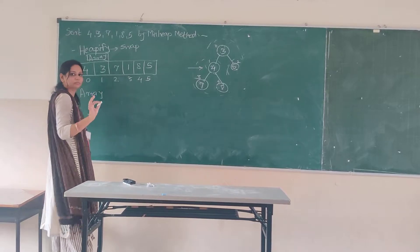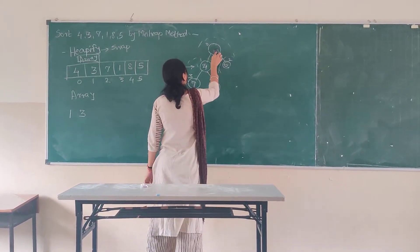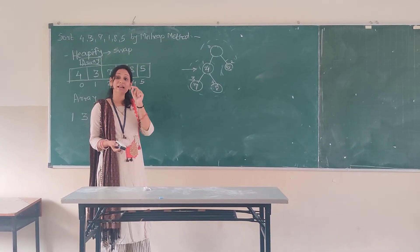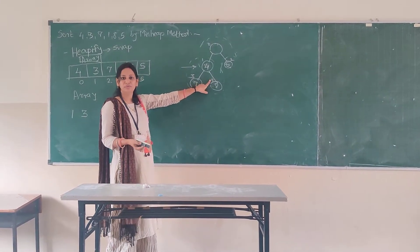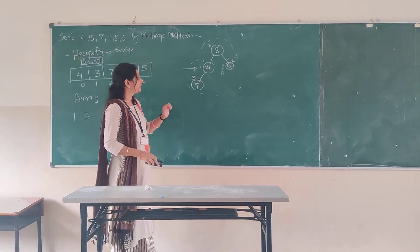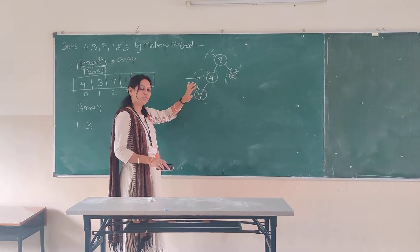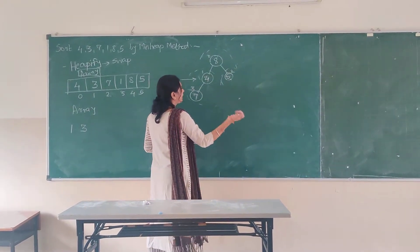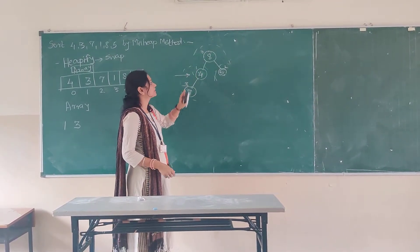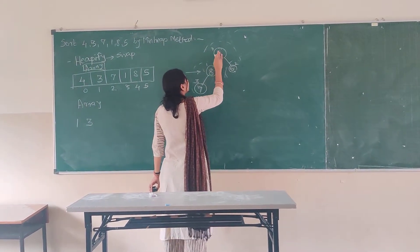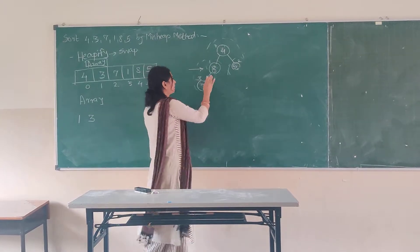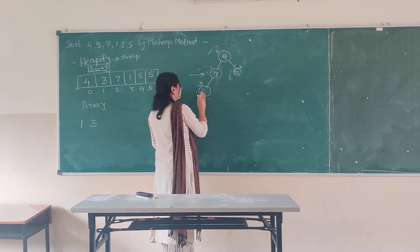We take element 3 into our sorted array and delete it from the tree. The element at the last location is now 4, so we take 8 from there. Doing comparison: 4 and 7 — 4 is less than 7, no swapping needed. Node 5 has no child node. Dealing with 8, 4, and 5: 4 is less than 8, so we do swapping — 8 comes here and 7 comes here.